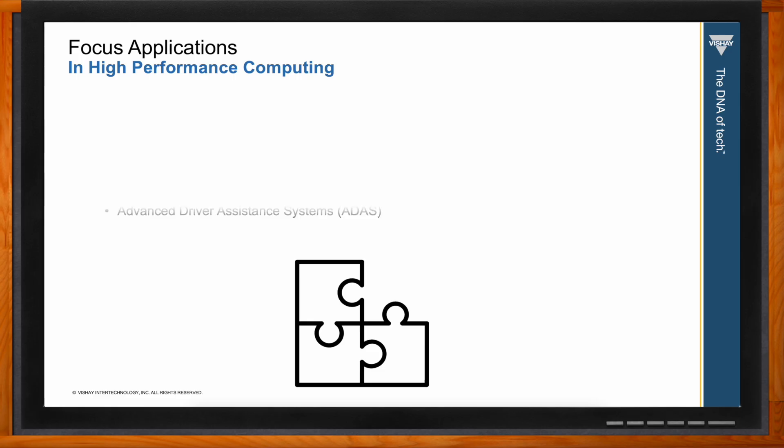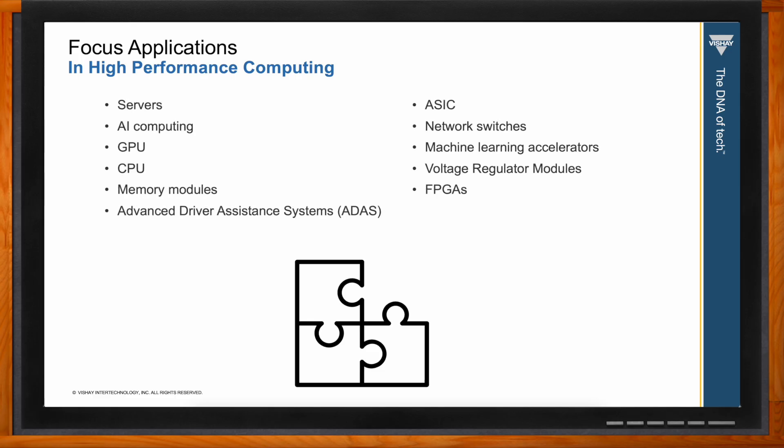We're talking about anything with very high power demands — processors performing very intensive computations, ranging from servers, memory modules, image processors, machine learning accelerators, and even ADAS to enable autonomous driving. We're at a point technologically where the limiting factor for AI growth is not computing power — we have plenty of that.